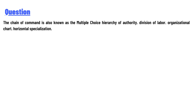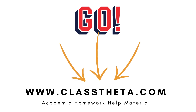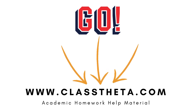The chain of command is also known as — multiple choice options: hierarchy of authority, division of labor, organizational chart, or horizontal specialization? The answer: the chain of command is also known as a hierarchy of authority.